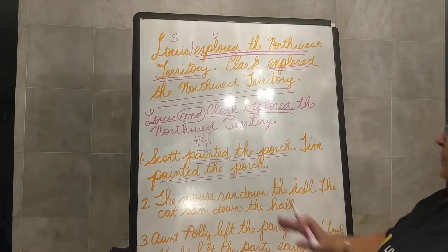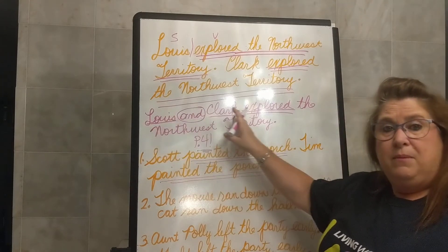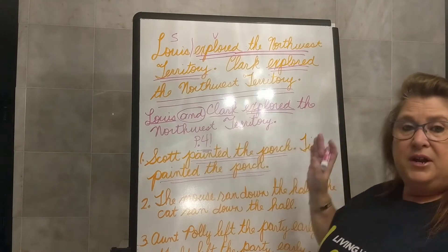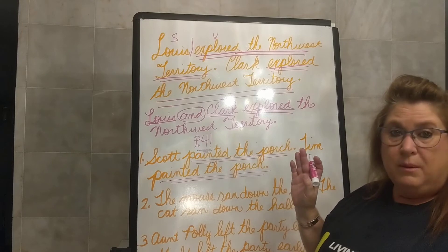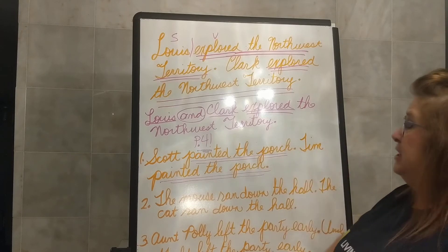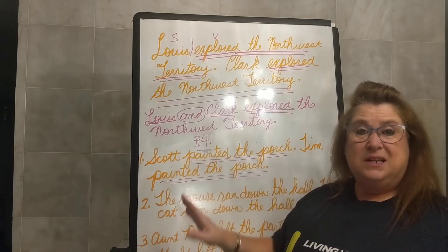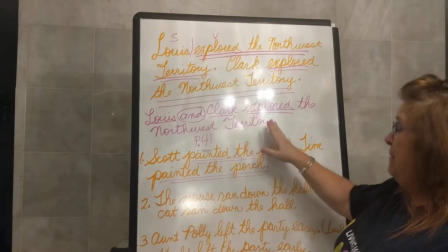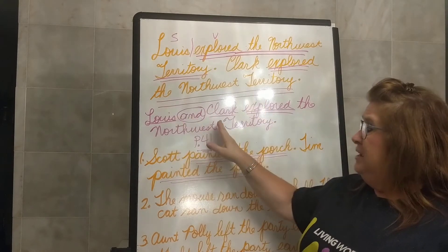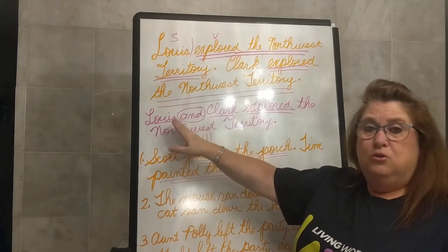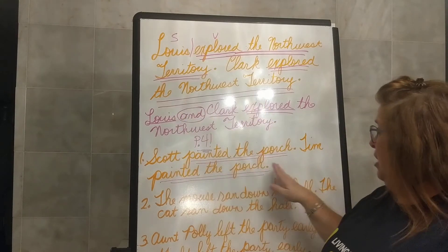Now notice up here, when I wrote my and, there is no comma. This is not a comma-but, comma-and, comma-or, comma-nor, comma-for, comma-yet. Because we are not combining sentences, we are combining subjects. So there is no comma. Lewis and Clark — there will be no comma. Scott and Tim painted the porch.